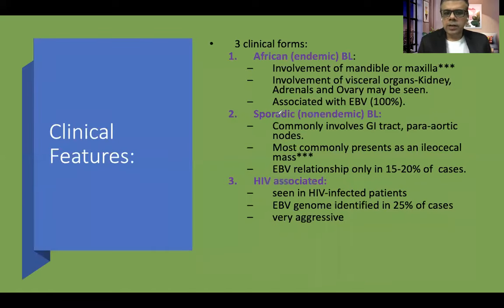Clinically, three different forms are identified. In African endemic Burkitt lymphoma, involvement of the mandible or maxilla — the jaw bones — is very characteristic. There is also high predilection for involvement of visceral organs like kidney, adrenals, and ovary. Epstein-Barr virus association is seen in almost all patients, which is a key factor in endemic Burkitt lymphoma.